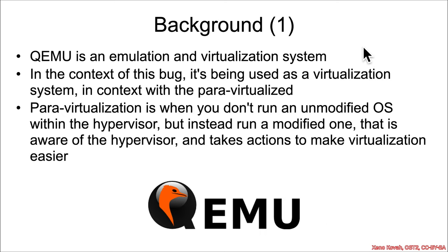In the context of this bug, we're going to be dealing specifically with para-virtualization. Para-virtualization is when instead of the virtualization system trying to run an unmodified operating system, it runs a modified operating system that is intentionally modified to make virtualization easier.